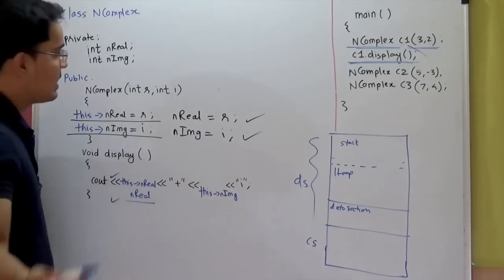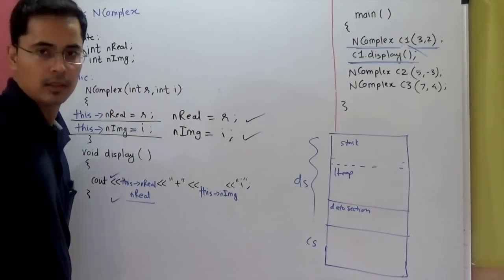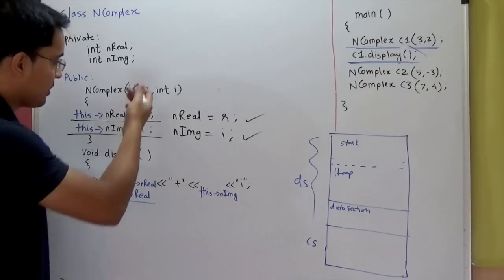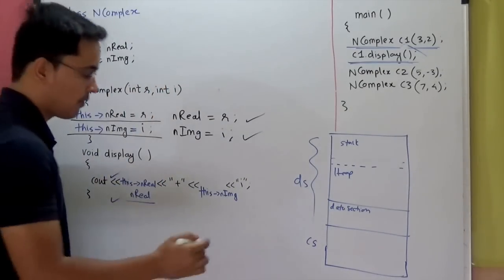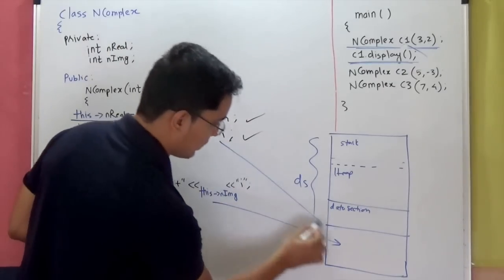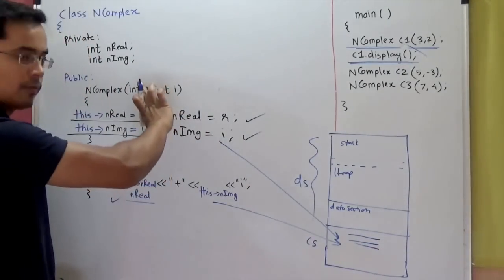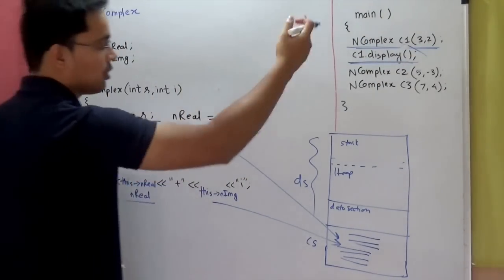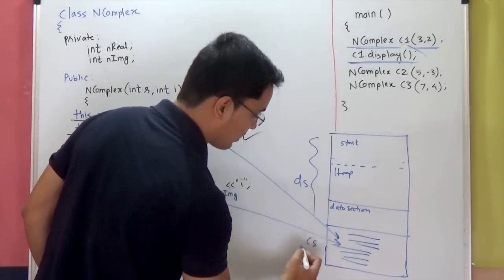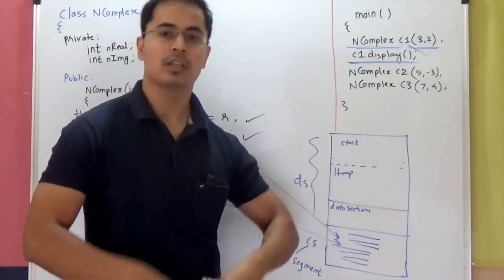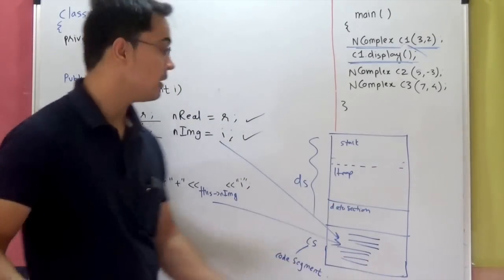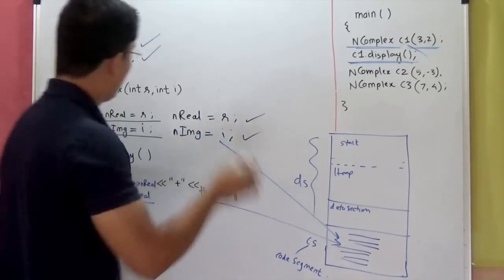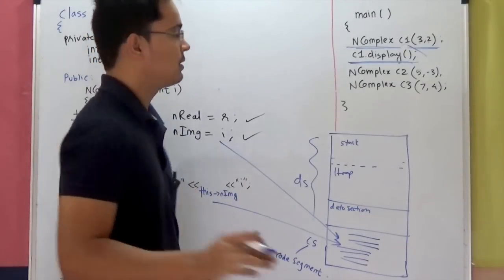The member functions of the class will always be stored in the code segment, and they are stored once — meaning there is only one copy of member functions in the code segment. Because the code is the same for all objects, these don't change per object. For every individual object, what is different is their data members. A separate copy of data members is created for each object, except static data members, which we are going to study next.